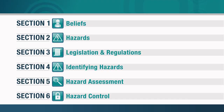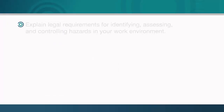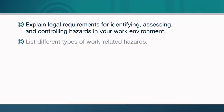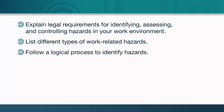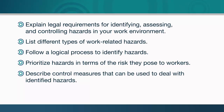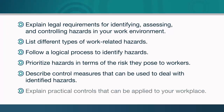After completing this course, you should be able to explain legal requirements for identifying, assessing, and controlling hazards in your work environment; list different types of work-related hazards; follow a logical process to identify hazards; prioritize hazards in terms of the risk they pose to workers; describe control measures that can be used to deal with identified hazards; and explain practical controls that can be applied to your workplace.